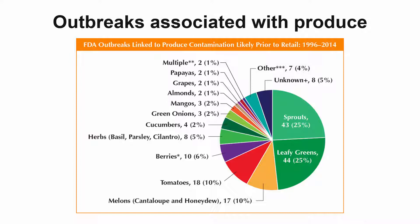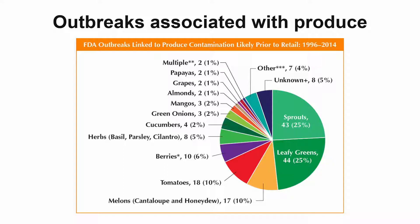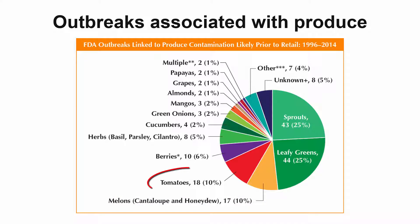The most common crops involved with foodborne illness outbreaks are sprouts and leafy greens, both shown here in green, melons, shown in yellow, and tomatoes, shown in red.